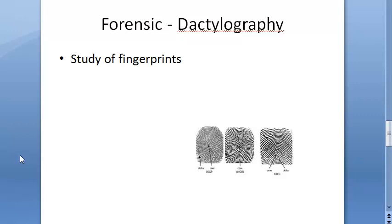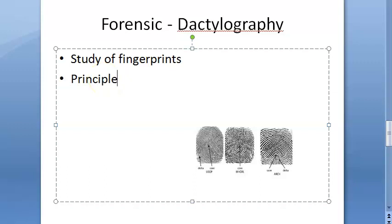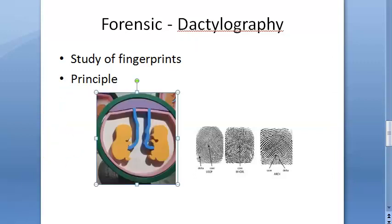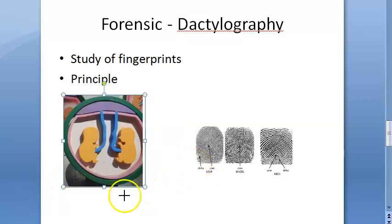The principle is that fingers of each individual have a pattern formed by the ridges. These fingerprint patterns are distinctive even in identical twins — they don't have the same pattern. Even though identical twins are genetically the same, their fingerprints differ because fingerprints are formed due to the pressure of amniotic fluid on the fingers during development.